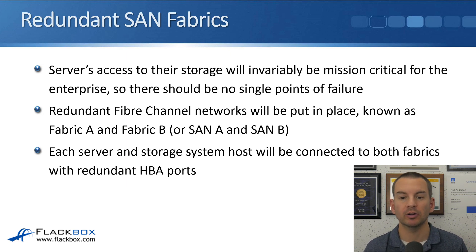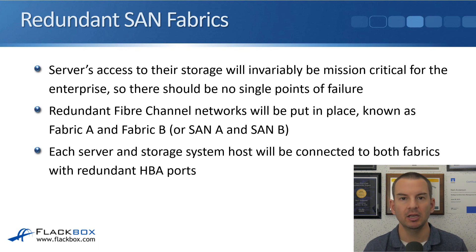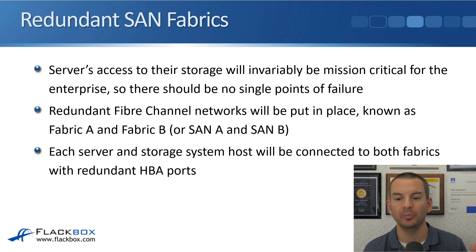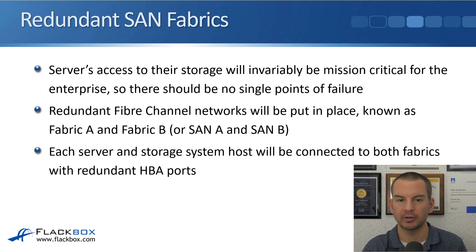Redundant Fibre Channel networks will be put in place, and they're known as Fabric A and Fabric B, but they can also be known as SAN A and SAN B. Each server and storage system host will be connected to both fabrics with redundant HBA ports, so that gives them two possible paths at least to get to each other.